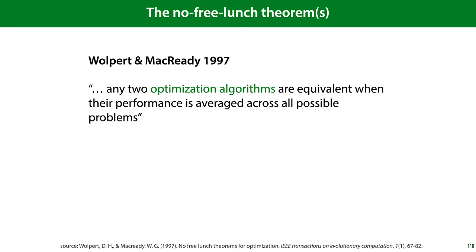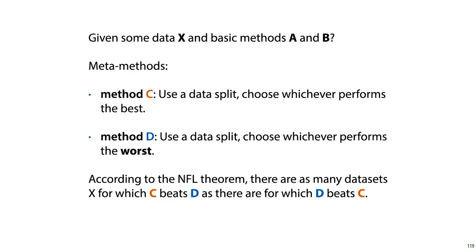To see what that implies, imagine you are given some data X and two basic methods A and B. The data may be a classification problem, and A and B may be a linear classifier or a decision tree classifier. Method C splits X into training data and validation data, computes the accuracy for both, and chooses the model that performs the best.